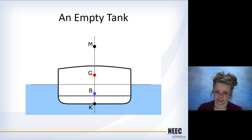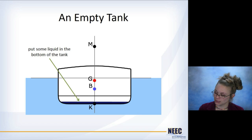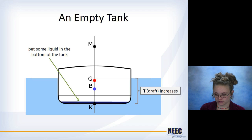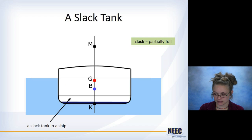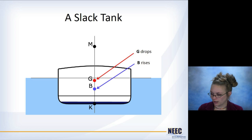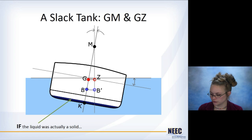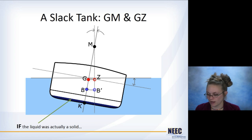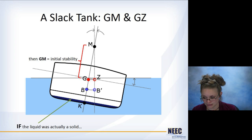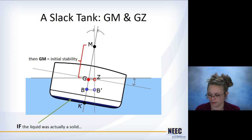Now we take this empty tank and put some liquid in the bottom of it. We've added weight, so the draft increases. It has now become a slack tank — a slack tank just means it's partially full. The center of gravity drops because we added weight down to the bottom of the ship; the center of buoyancy rises because draft has increased. If the liquid was actually a solid, you would have the center of buoyancy shift over, center of gravity does not move, and you get an initial stability measure with GM.